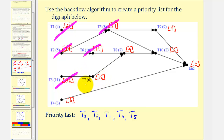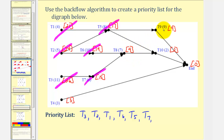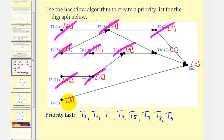Next, task seven has a critical time of fifteen hours. Notice how task eight and task nine both have critical times of nine hours. Typically we list the task with the lowest number first, so task eight comes before task nine — but because they have the same critical time, it really doesn't matter. That leaves us with task four at a critical time of three hours, and then task ten at two hours.